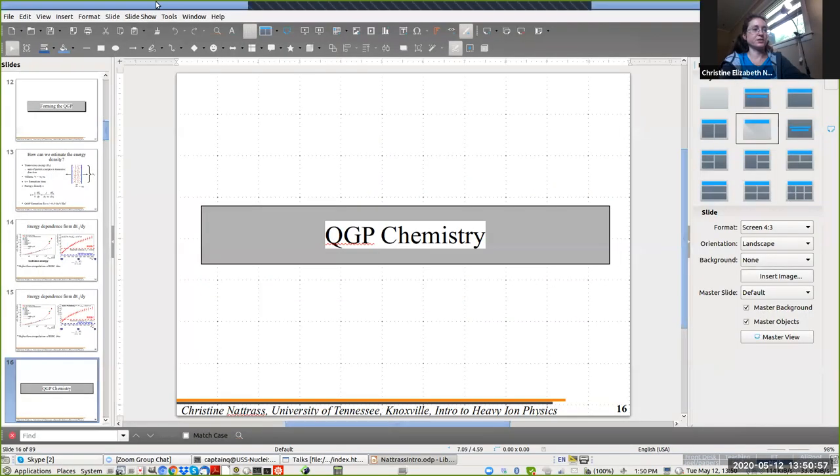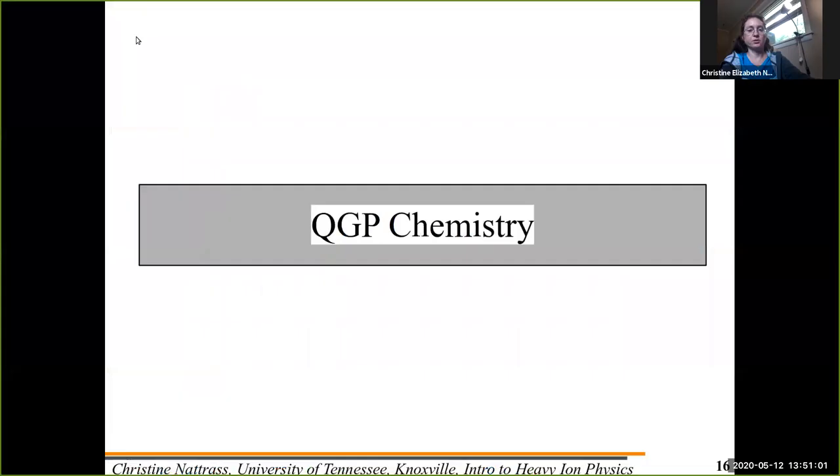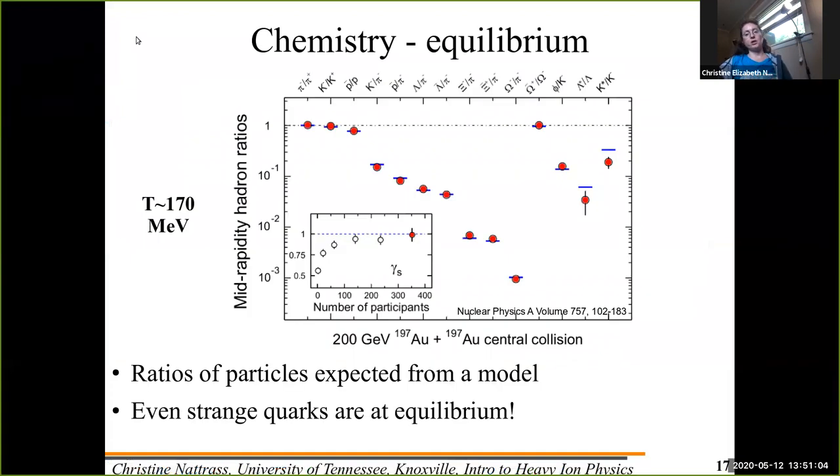I mentioned briefly at the beginning that we have these different phases in the collision, and one of them I talked about chemical and thermal freeze out. So another way that you can get a handle on the temperature is to look at the chemistry, the hadronic chemistry.